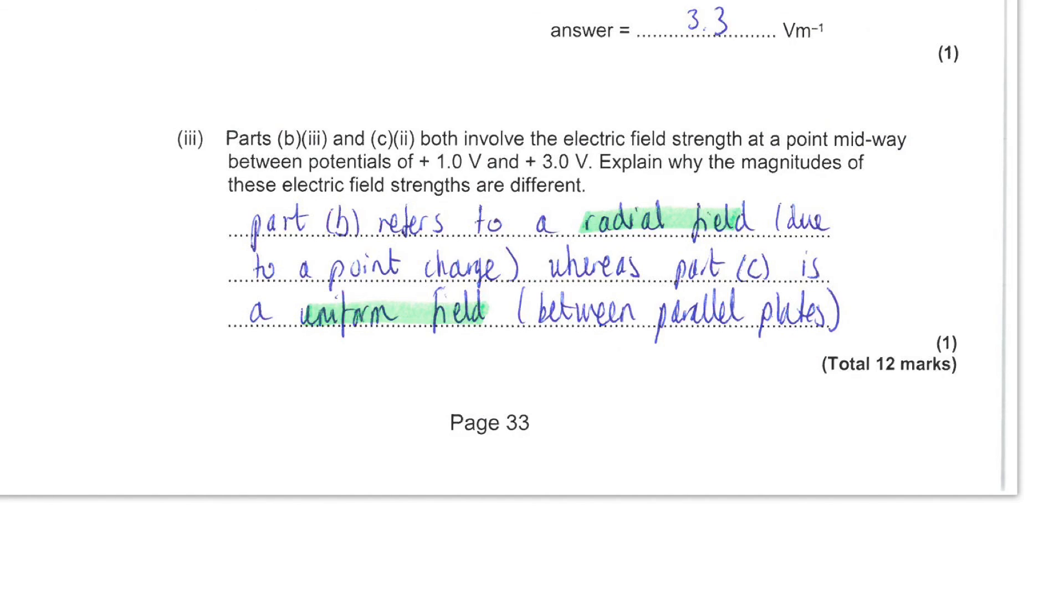So in a radial field field lines become increasingly far apart radially out from the central charge whereas between parallel plates we have uniform field lines with equal uniform separations.